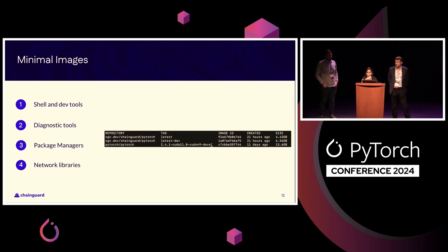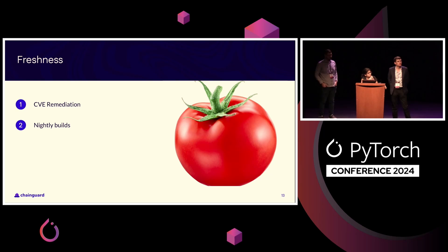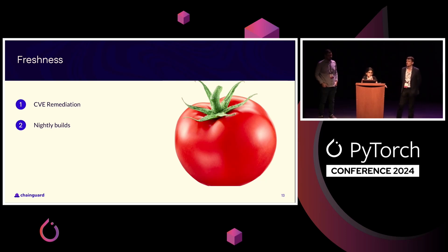One of the biggest challenges we faced was the very complex version matrix of all the components that together constitute Torch. As many of you know, most of them are quite tightly coupled, down to the toolchain used to build Torch. The upstream PyTorch releases cut a new release every five weeks or so. Every time a new release is published, ChainGuard builds an image for that variant across all supported Python versions and other libraries. These images are constantly scanned and patched whenever a CVE shows up, and our images are built nightly, so they're as fresh as they come.